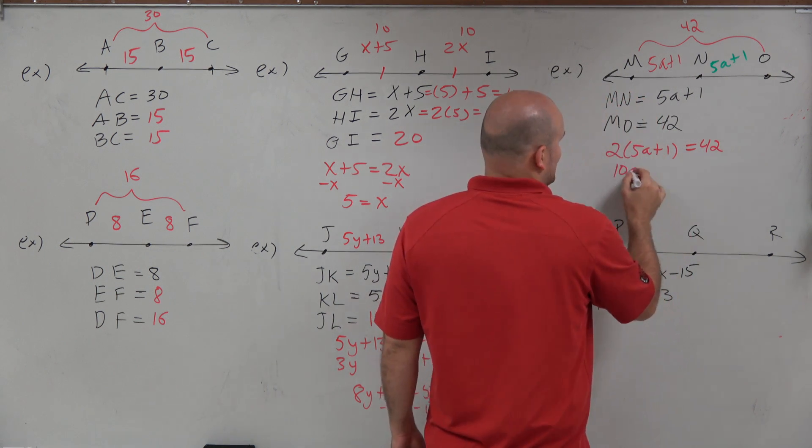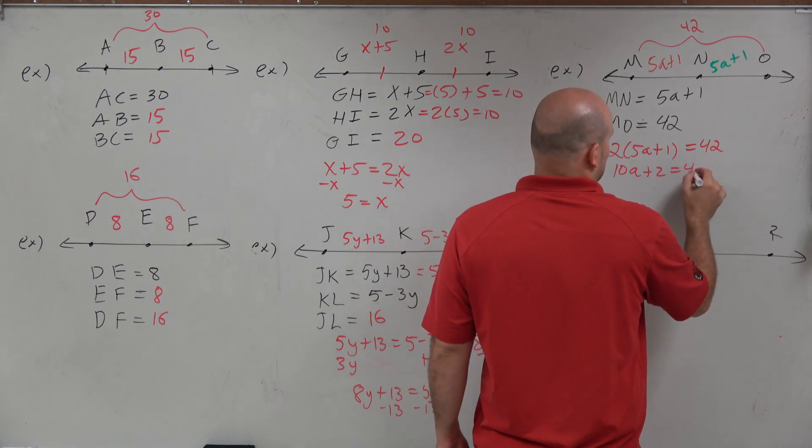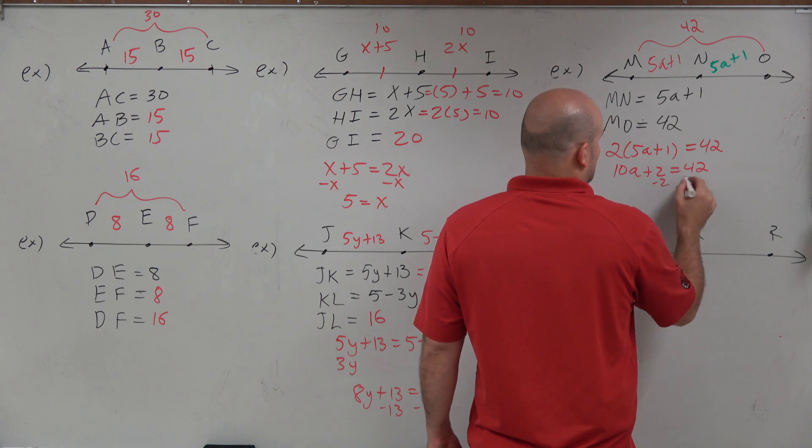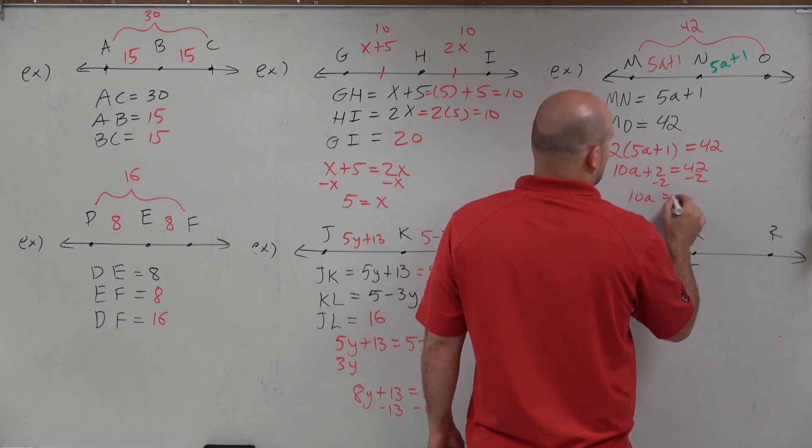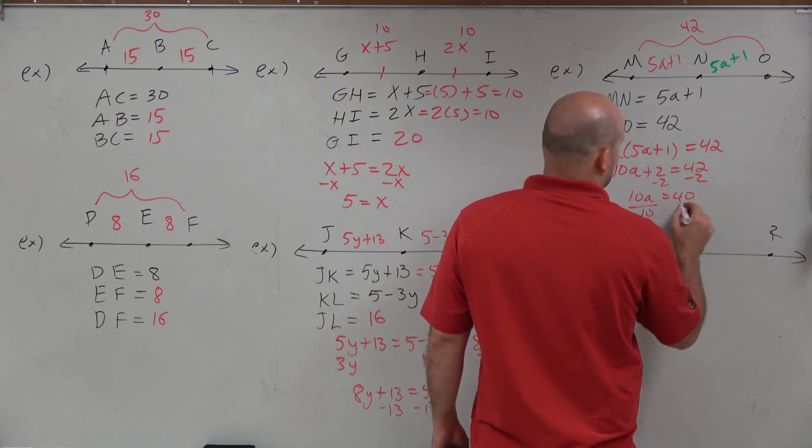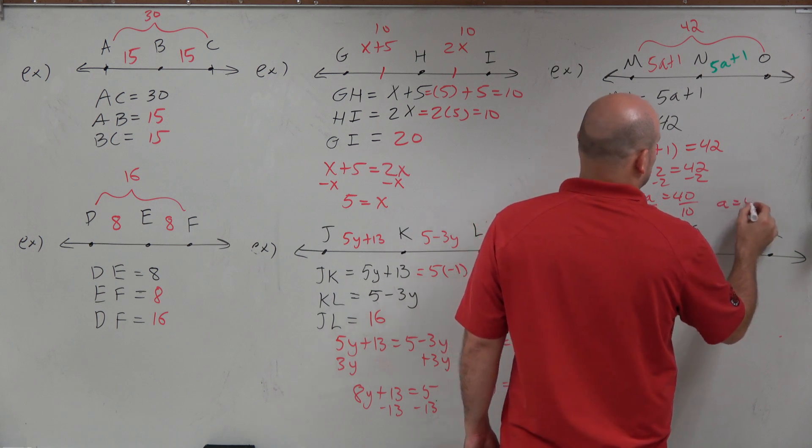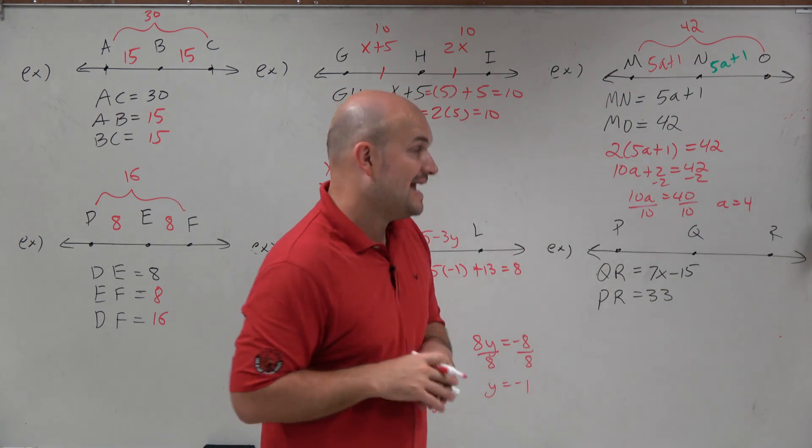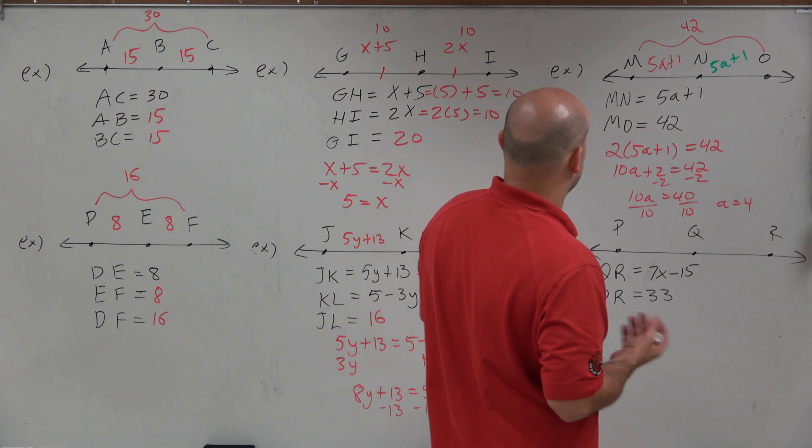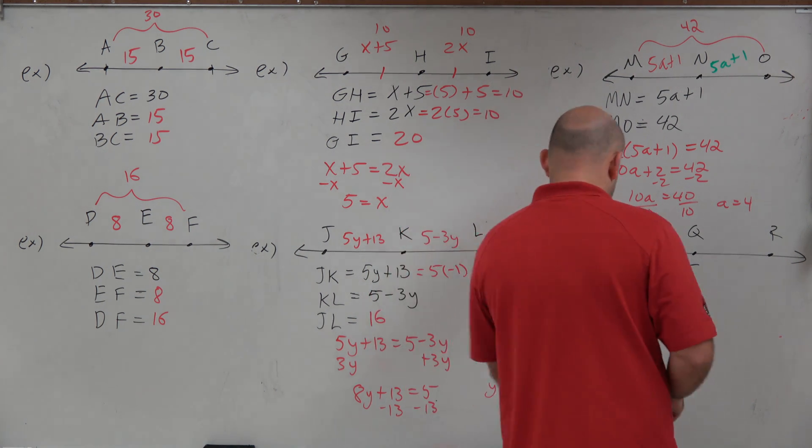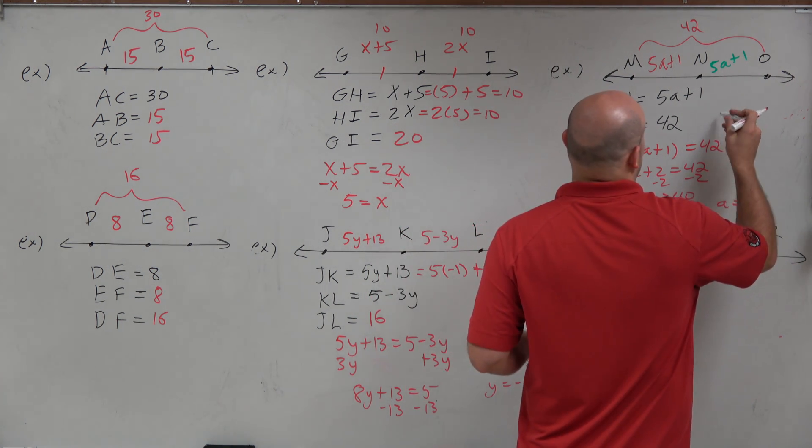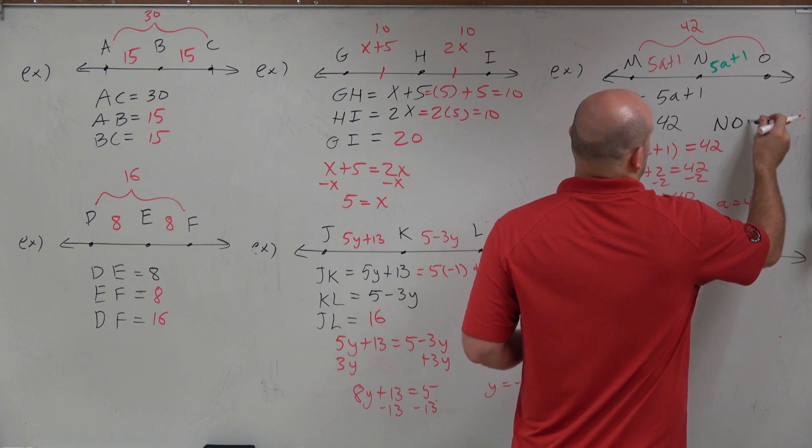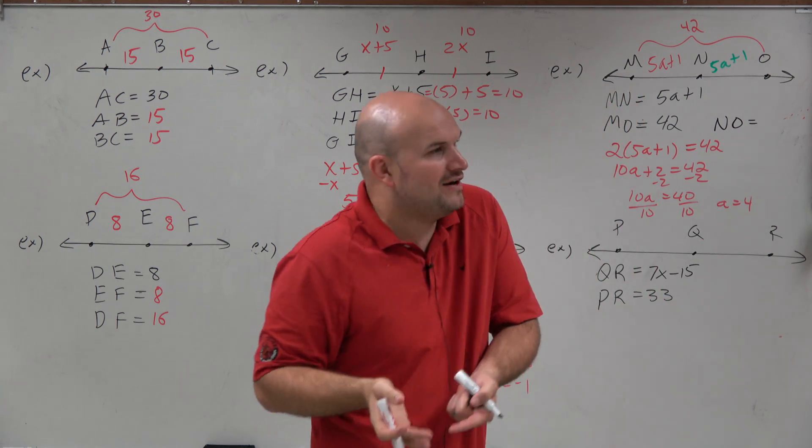Now let's go and see the math. So we have 10a plus 2 equals 42. Subtract 2, subtract 2. 10a is equal to 40. Divide by 10, divide by 10. A is equal to 4. So now we figured out a is equal to 4. And what are we trying to find? I didn't even write it down. We are trying to find NO. But it really doesn't matter. Whatever NO is, or whatever MN is, that's going to be the same thing as NO.